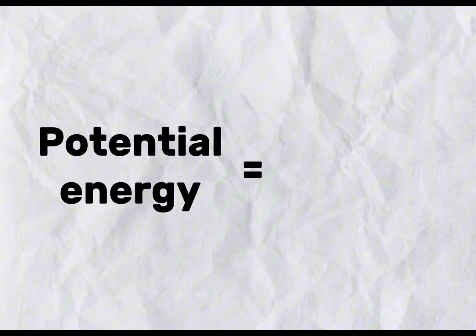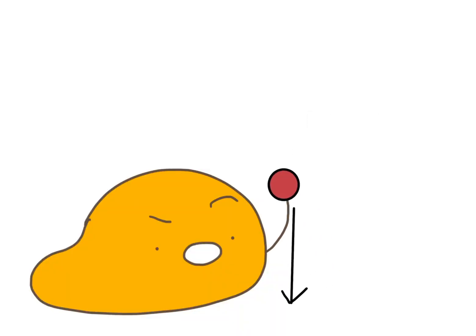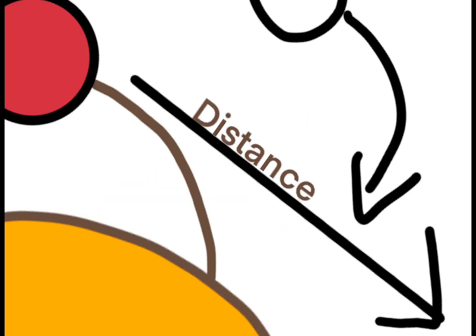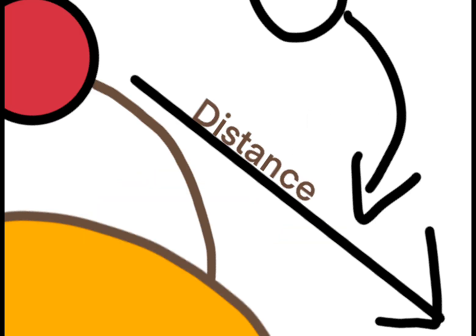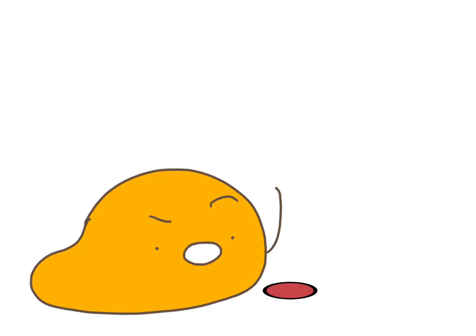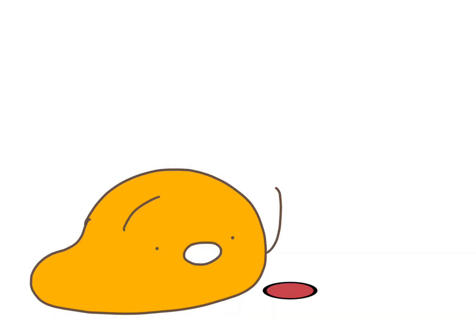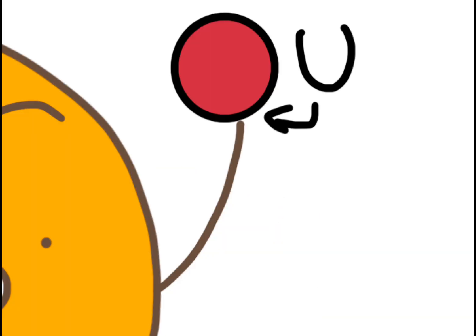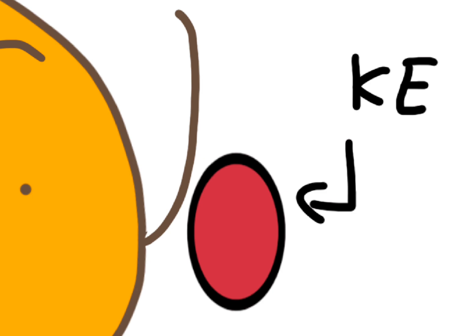Kinetic energy is usually caused by potential energy, which is the energy that an object stores due to its position — like elevating a ball against gravity. Potential energy depends on the distance the object is moved, like how high the ball is relative to the ground, and the strength of the force, like how big the planet you are on is. As I dropped the ball just now, the potential energy stored in the ball transferred into kinetic energy as it fell to the ground.